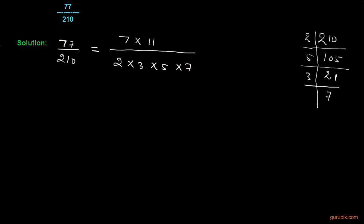What we observe is that 7 is a common factor both of numerator and denominator. So we can cancel out 7 from here and 7 from here. What remains is 11 in the numerator and in the denominator 2 multiplied by 3 multiplied by 5.